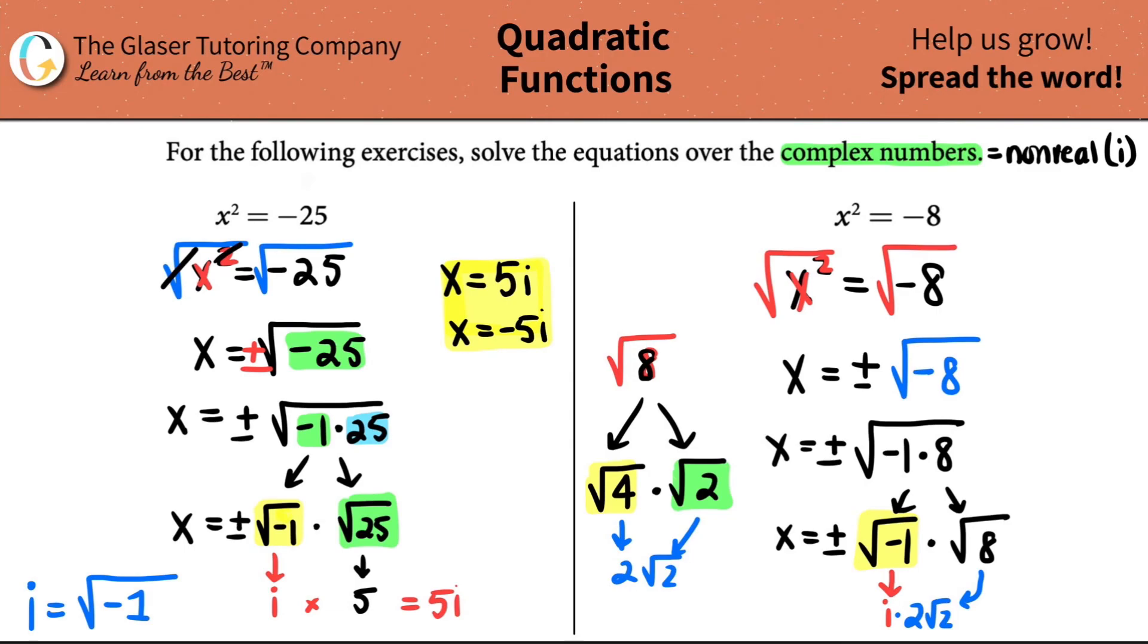So we know now that this is two rad two, and it's I times that value. And remember, with complex numbers, the number always goes in front of the I. So this turns out to be two rad two I, but plus or minus, so we got to get both answers. So X could either be two rad two I, or X could be negative two rad two I. And those are your two answers for this.